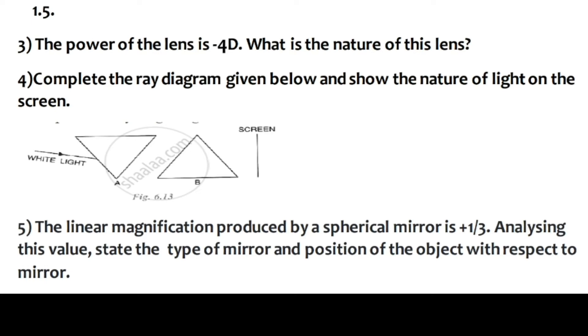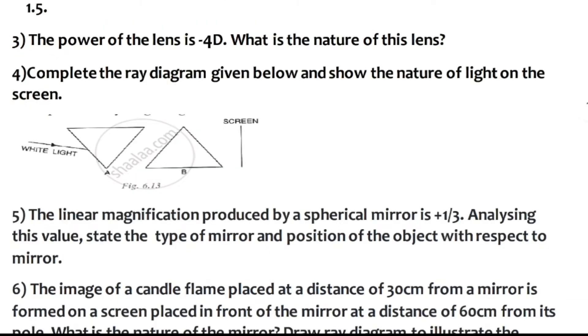Question 4: The linear magnification produced by a spherical mirror is plus 1 by 3. Analyzing this value, state the type of mirror and position of the object with respect to the mirror.